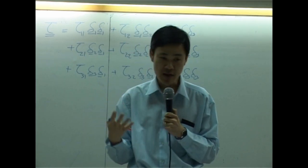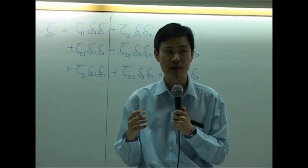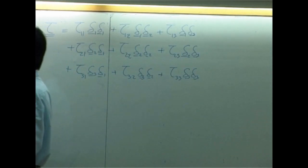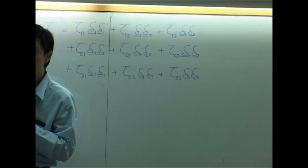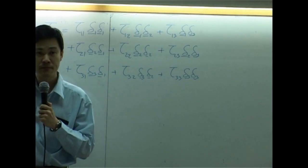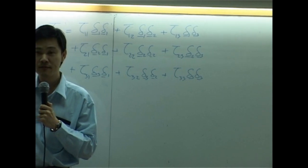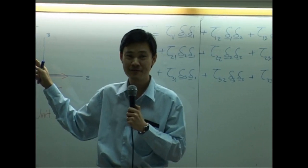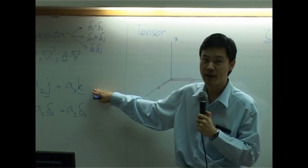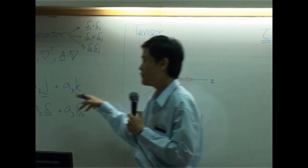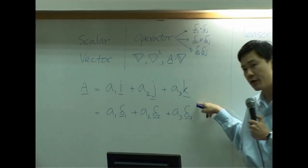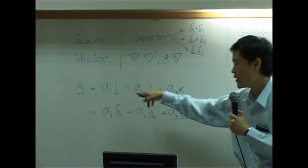So for today, I'd like to start with something I forgot on Wednesday — I forgot to talk about tensor. Do you know what a tensor is? About vectors: you know vectors, right? On Wednesday we said that vector A can be written as a combination of three unit vectors.